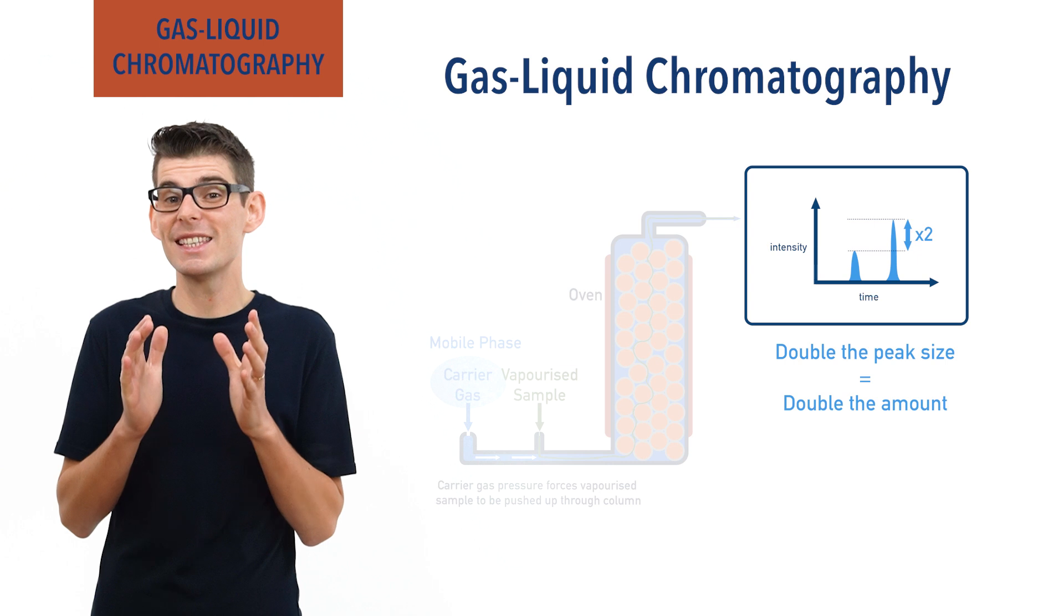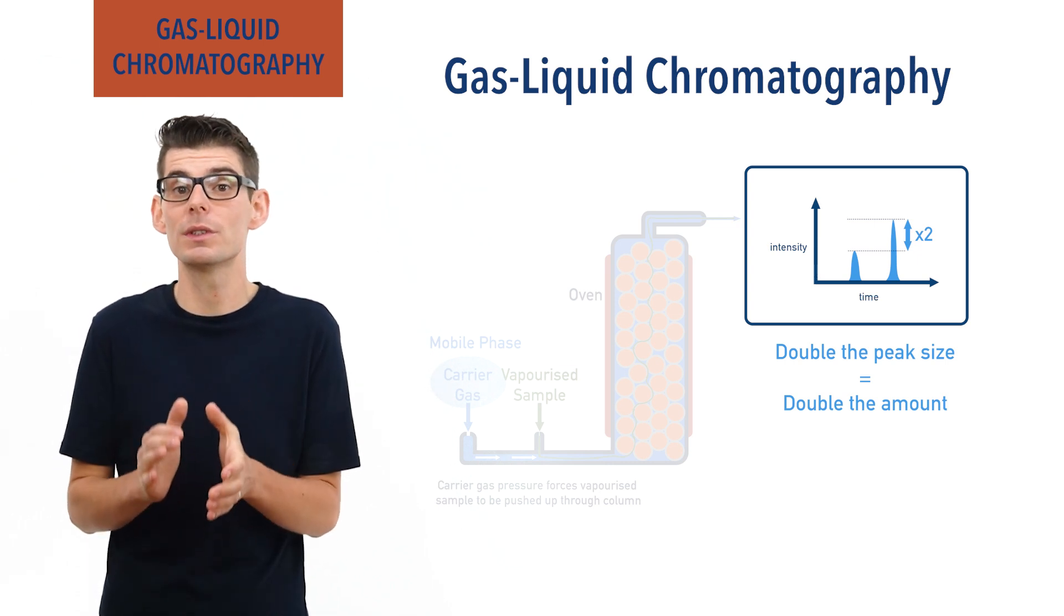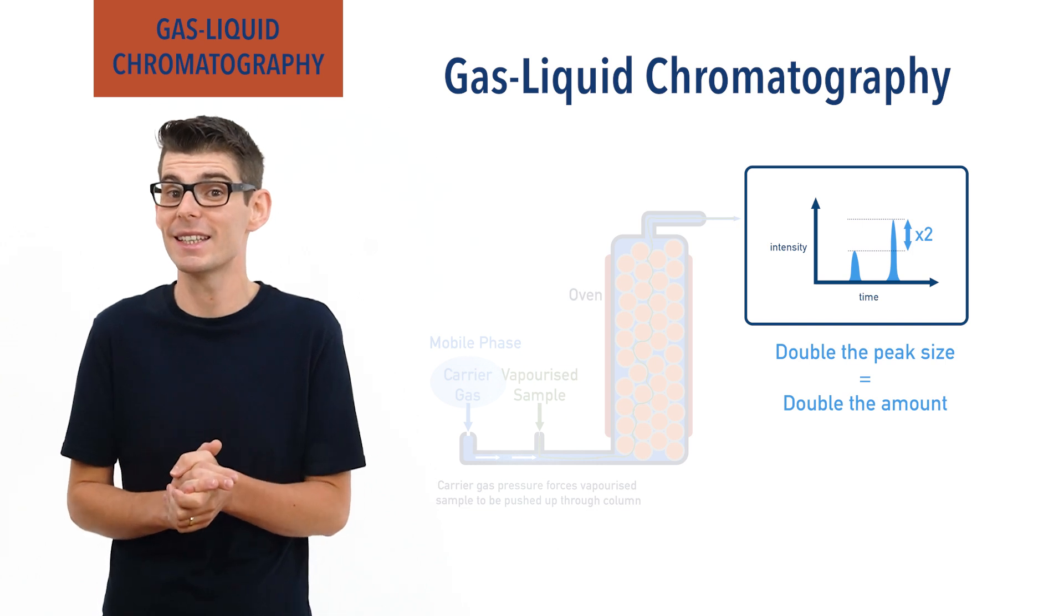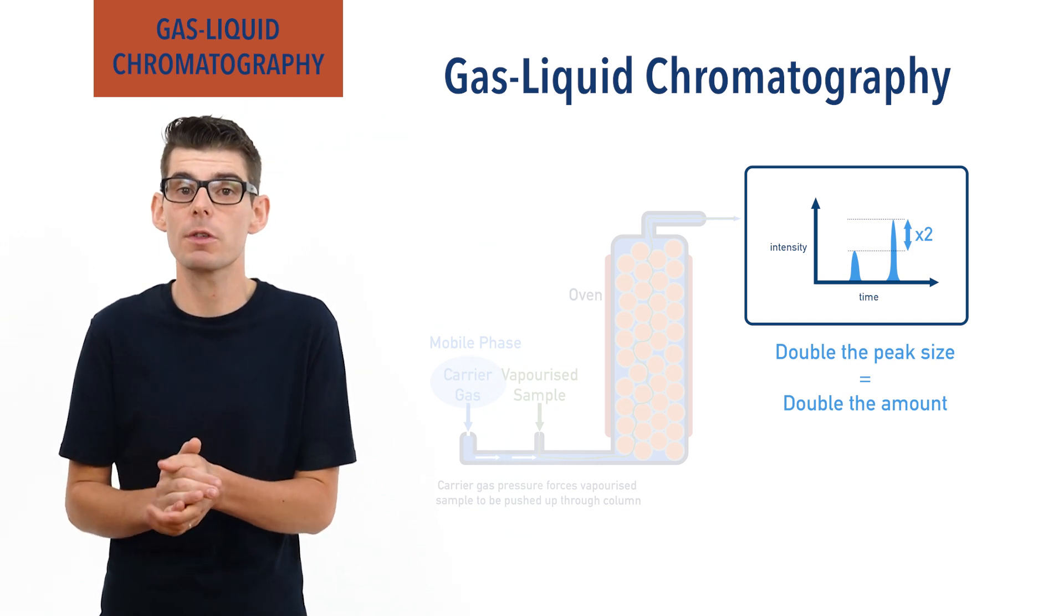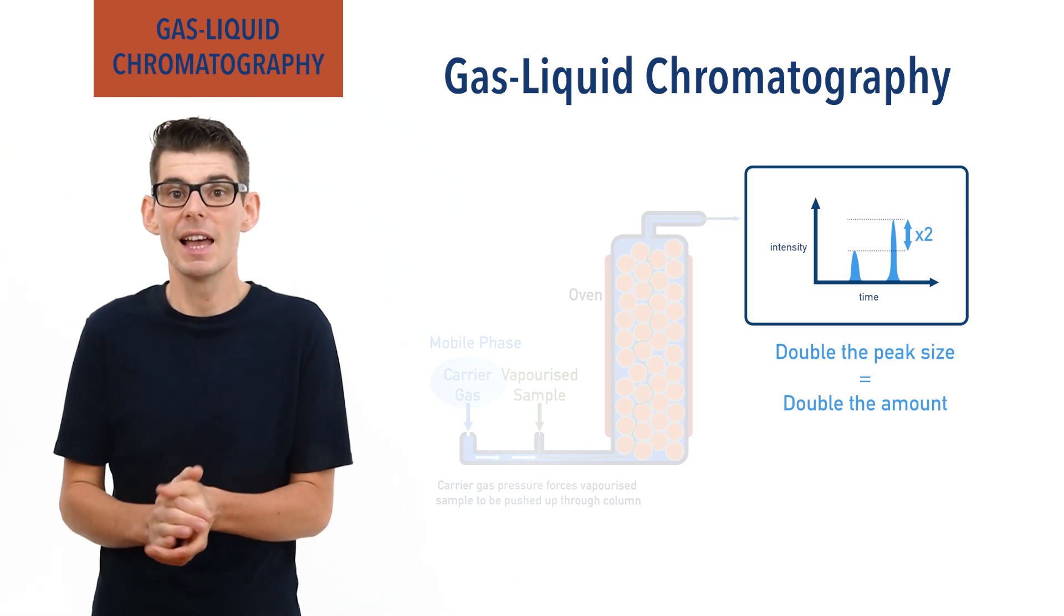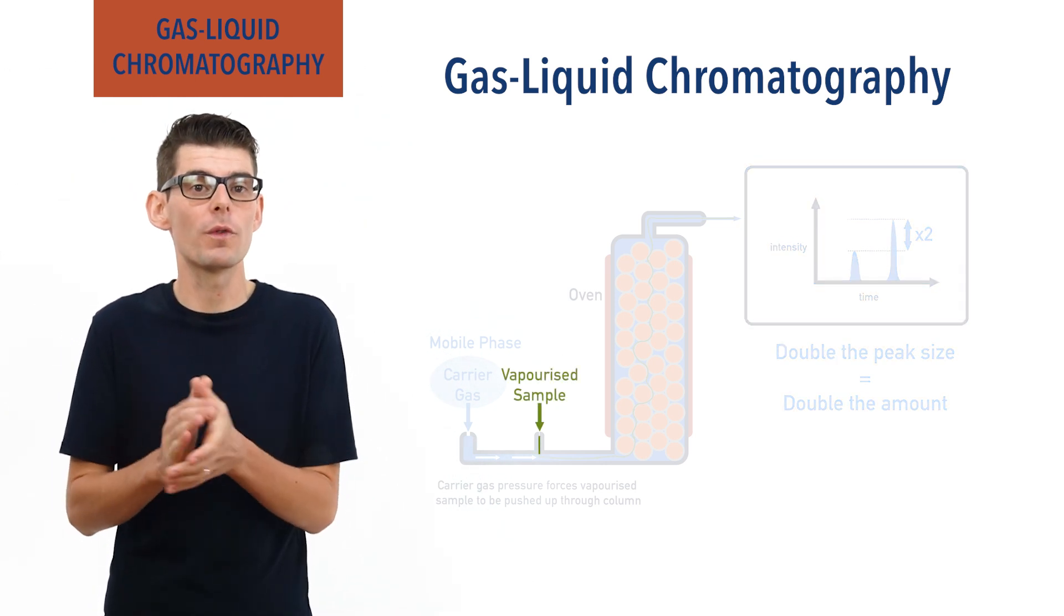The process is very precise and can be used to analyze very small quantities. It is however complicated to set up and all samples must be injected into the mobile phase, the inert carrier gas, as a vapor before they enter the column.